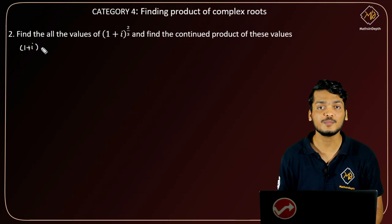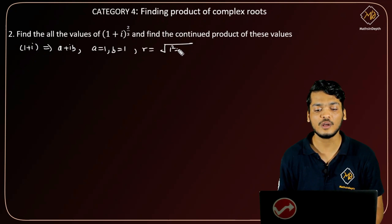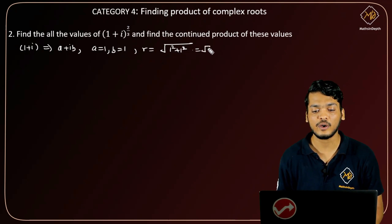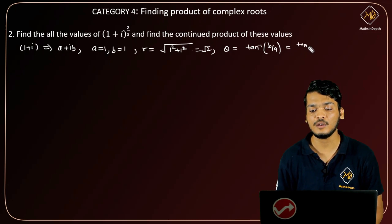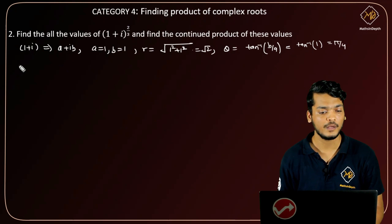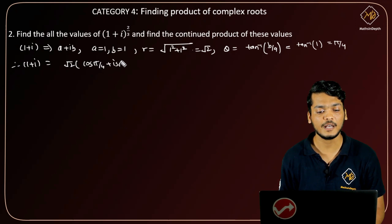First, we will convert (1+i) into its polar form. Comparing (1+i) with a+ib, we get a=1, b=1. Therefore modulus r equals square root of (1² + 1²), which equals square root of 2. And theta equals tan⁻¹(b/a). Since both a and b are positive, this equals tan⁻¹(1), which equals π/4.